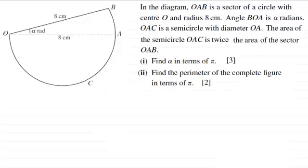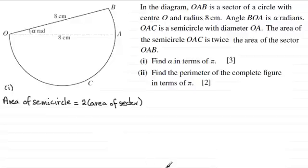So to do the first part we know that the area of the semicircle is equal to twice the area of the sector. So therefore if we work out the area of the semicircle it's got a radius of four centimetres so it's going to be π r squared so that'd be π times four squared for the area of a circle and then we just divide that by two giving us the area of the semicircle.